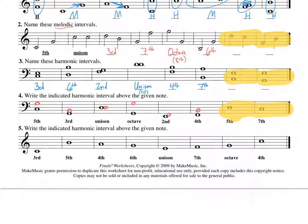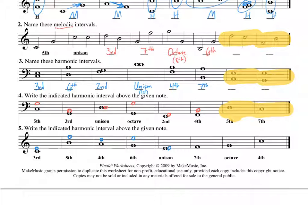The last one: write the indicated harmonic interval above the given note. Once again we're doing a harmonic interval. I'm going to do the first one — we'd have a space and a line. A fifth brings us to an F. So we did a bass clef, now we're going to do a treble clef. The clef doesn't really matter because the interval is still the same on the staff no matter which one you do. One, two, three, four — this should put us on a D. A sixth should put us on an E. Unison — we're going to put it to the right. And seventh — we can go to an octave to an F and then go down one note, because an octave is an eighth; go down and you're on the seventh.